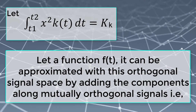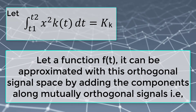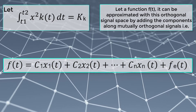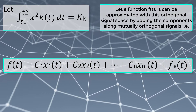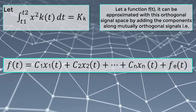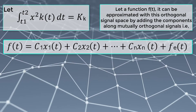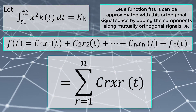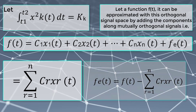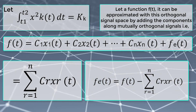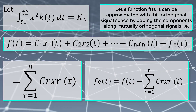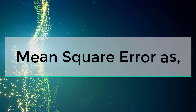A function f(t) can be approximated within the orthogonal signal space by adding components along mutually orthogonal signals. That is, f(t) equals c1 times x1(t) plus c2 times x2(t) plus so on plus cn times xn(t), which can be written as the summation from r equals 1 to n of cr times xr(t). The error fe(t) equals f(t) minus the summation from r equals 1 to n of cr times xr(t), representing the mean square error.